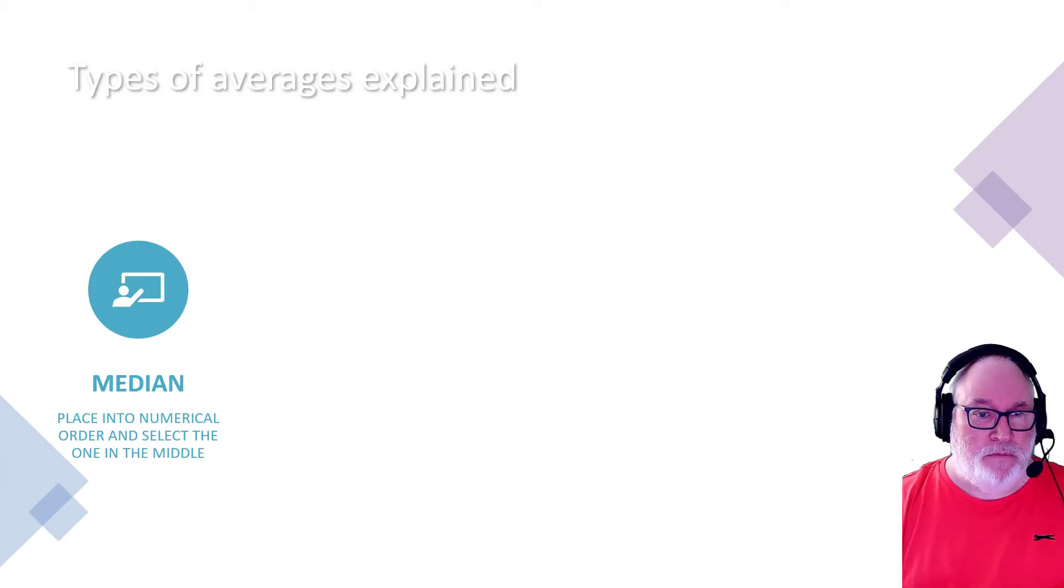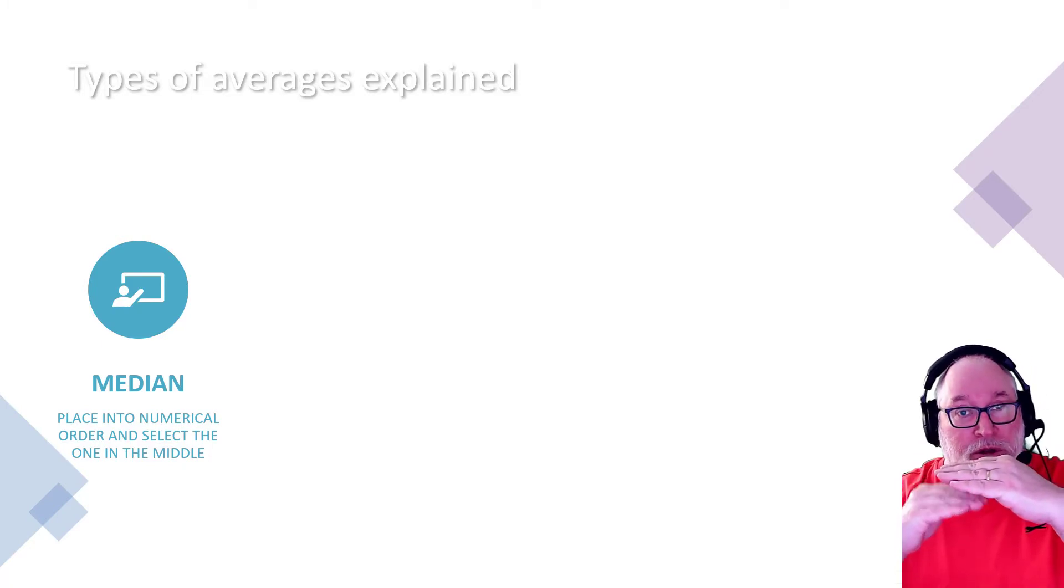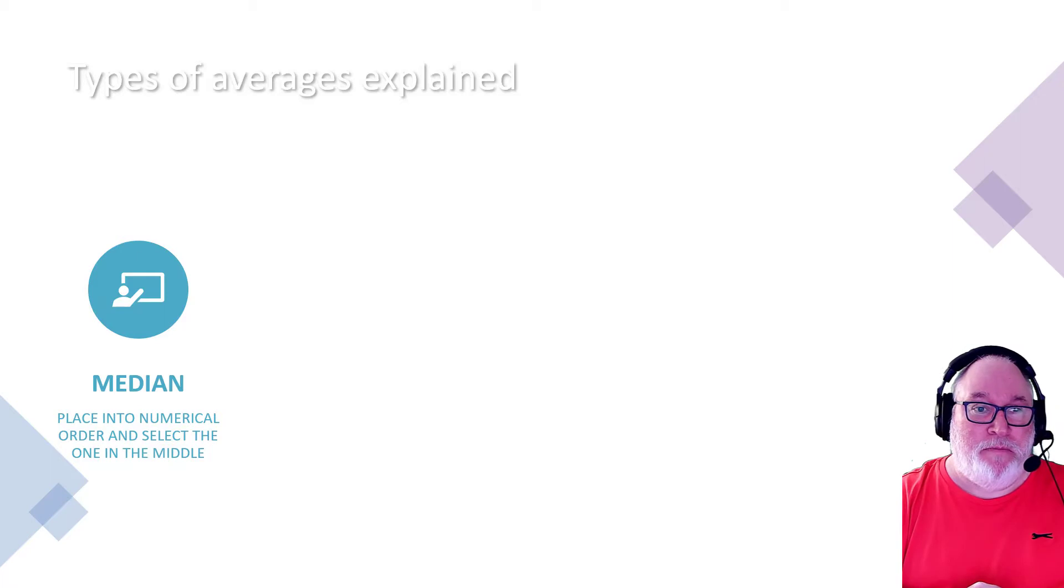So the median, you put all your numbers that you've got there that you want to find the average of and you put them into numerical order, the lowest to highest. Whichever way you want to do it. And you pick the one in the middle. That's your median.